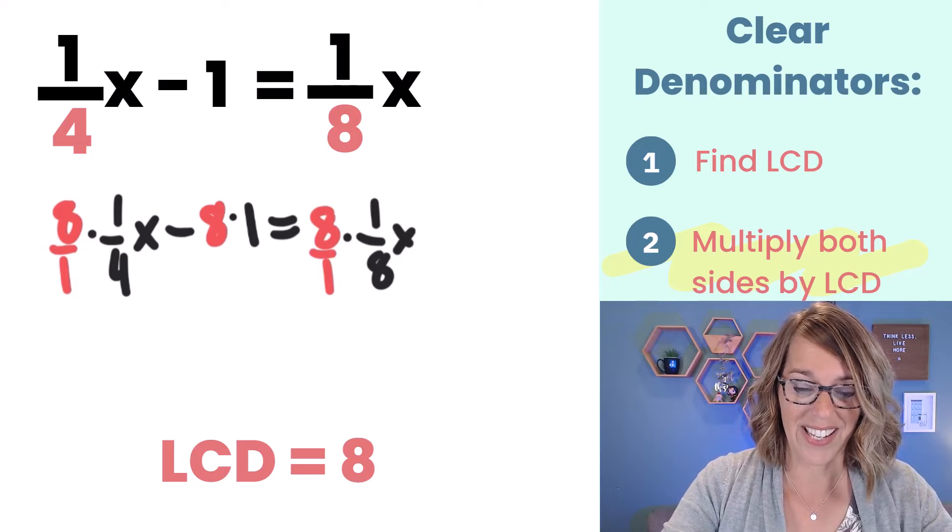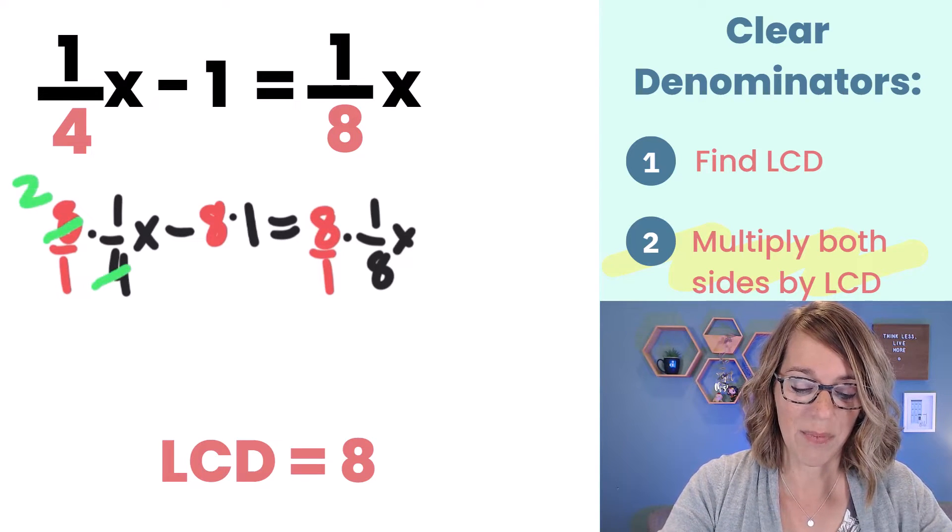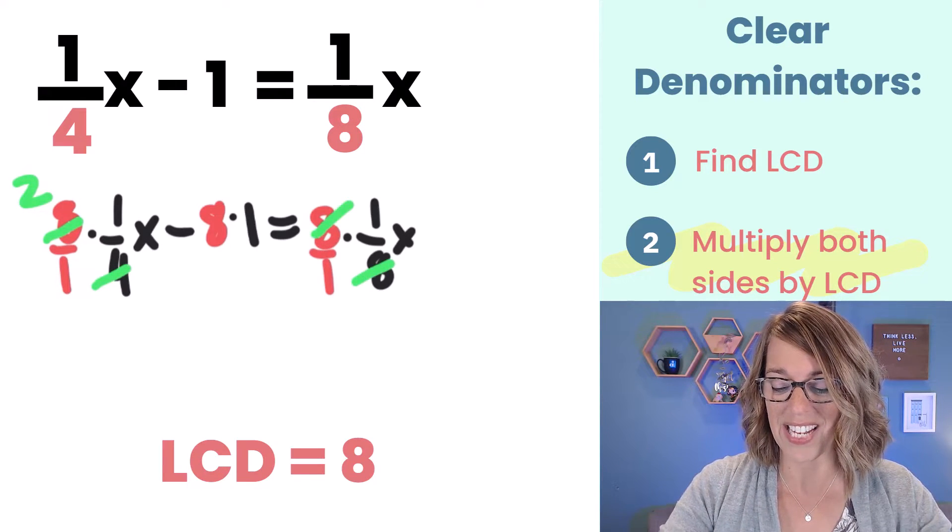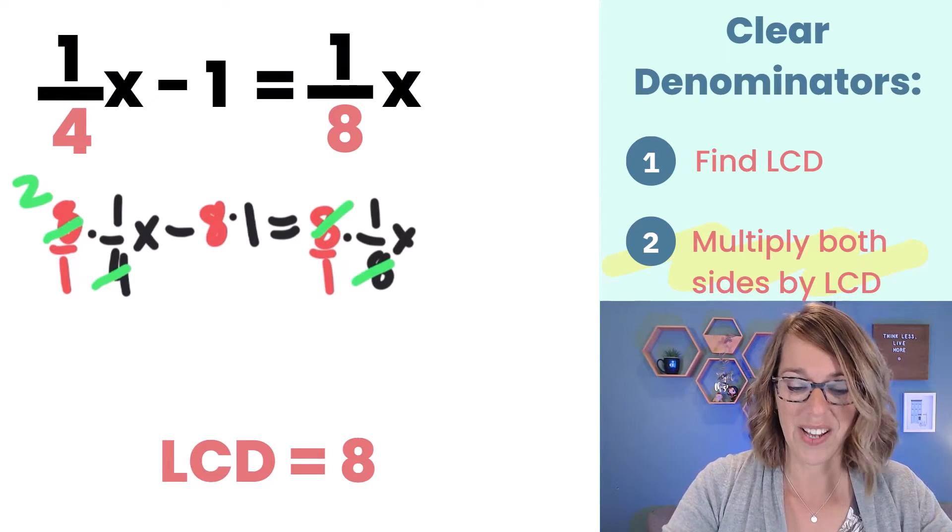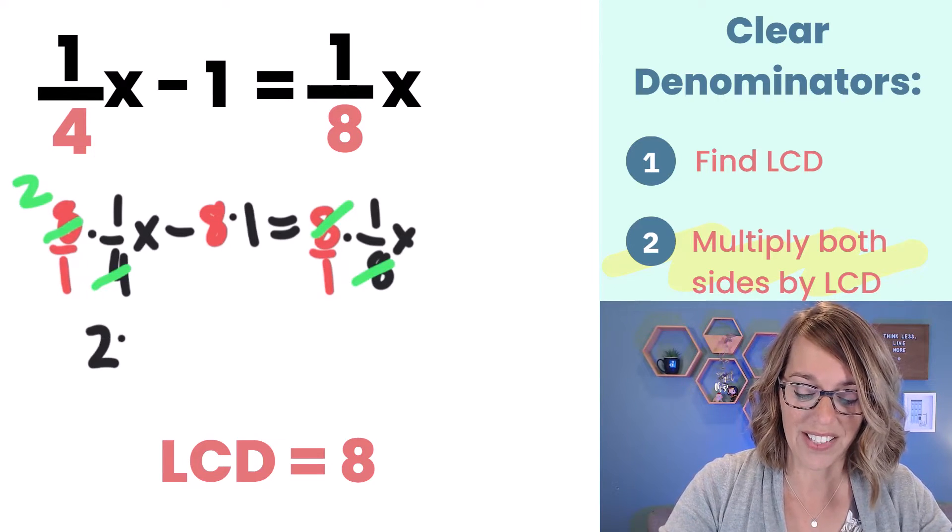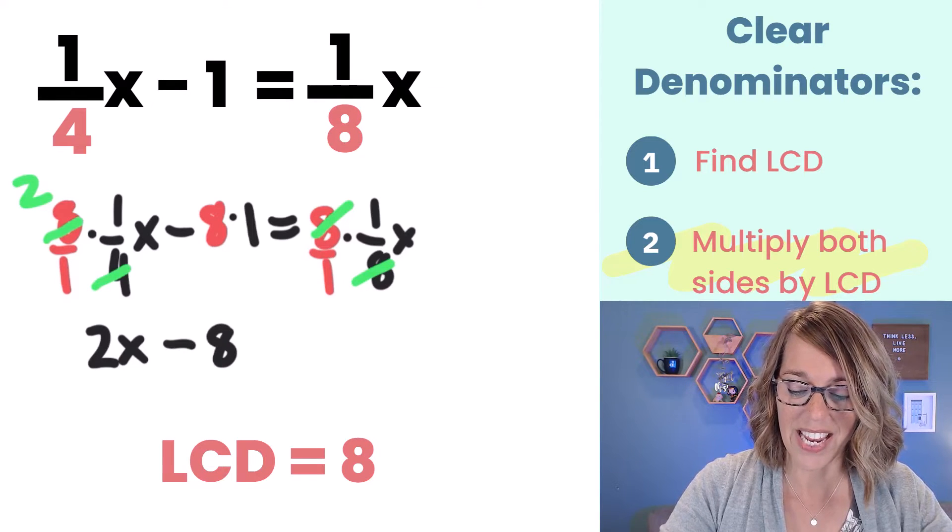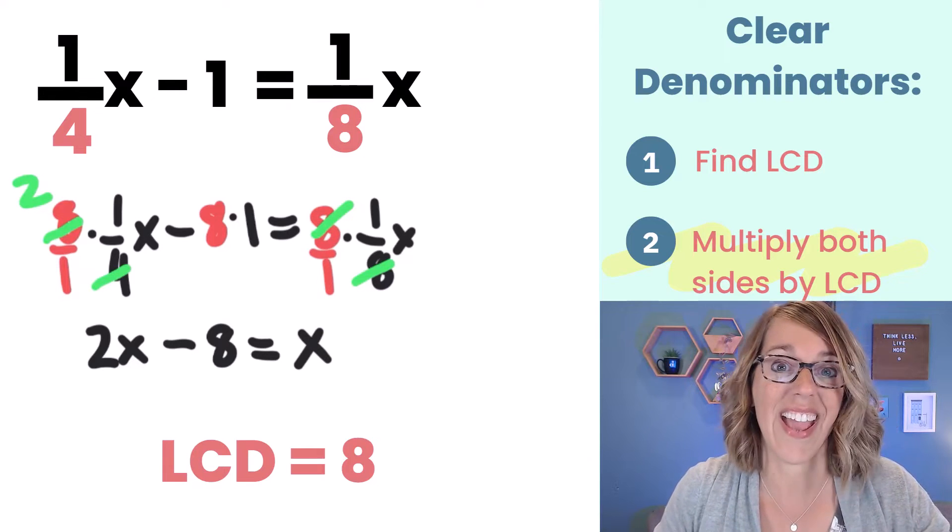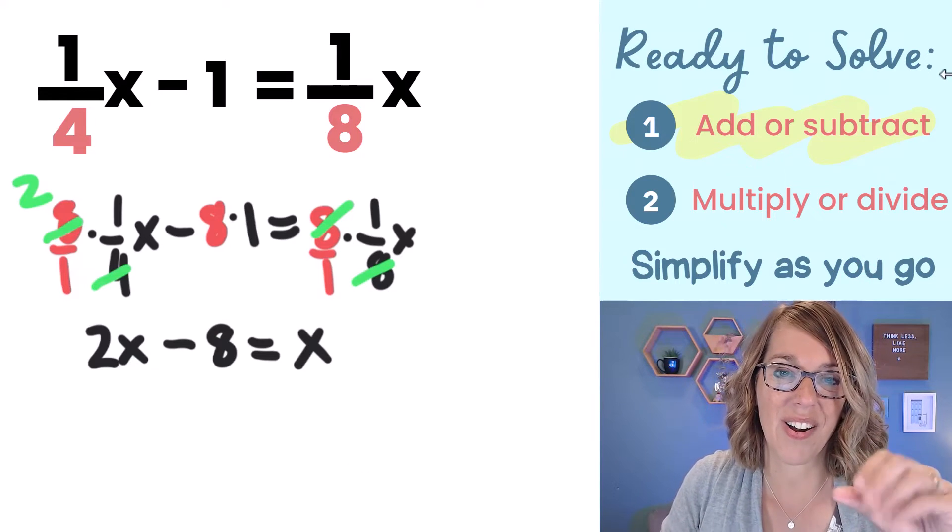Now let's cancel. This is the best part. So four goes into eight and it leaves me with a two. On the other side of the equation I can cancel eight divided by eight and it leaves me with a 1x. So I end up with this super nice looking equation. I have 2x minus 8 equals x. No fractions and this is where we can start solving.